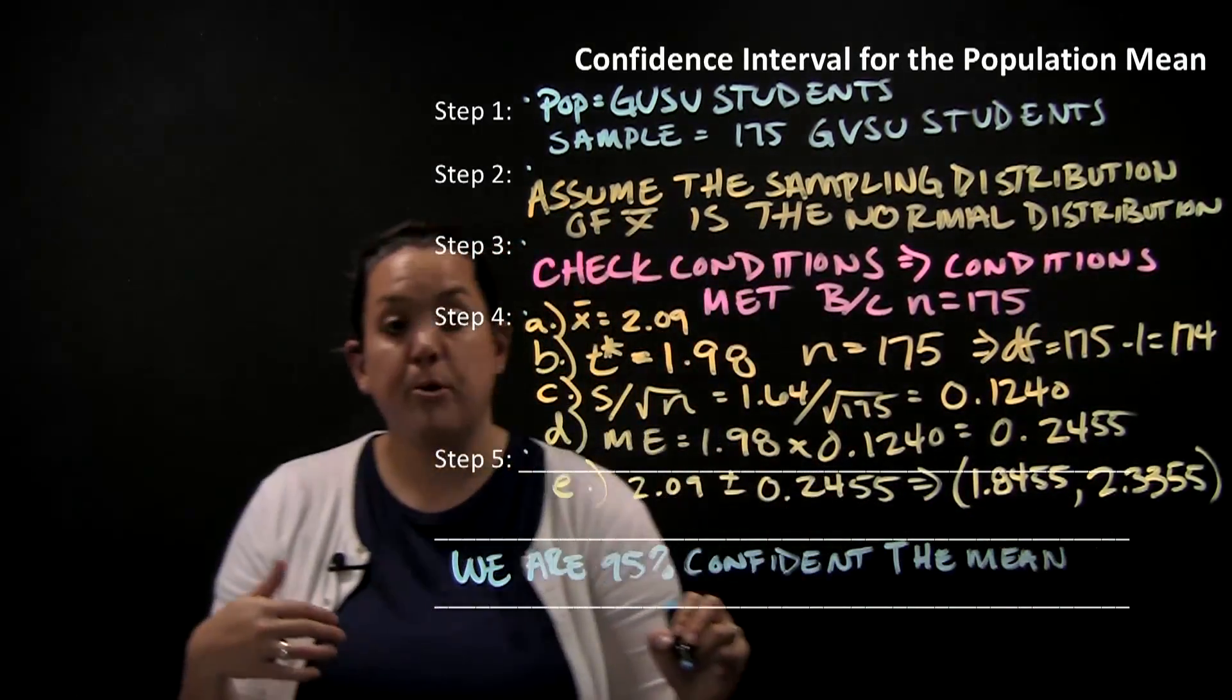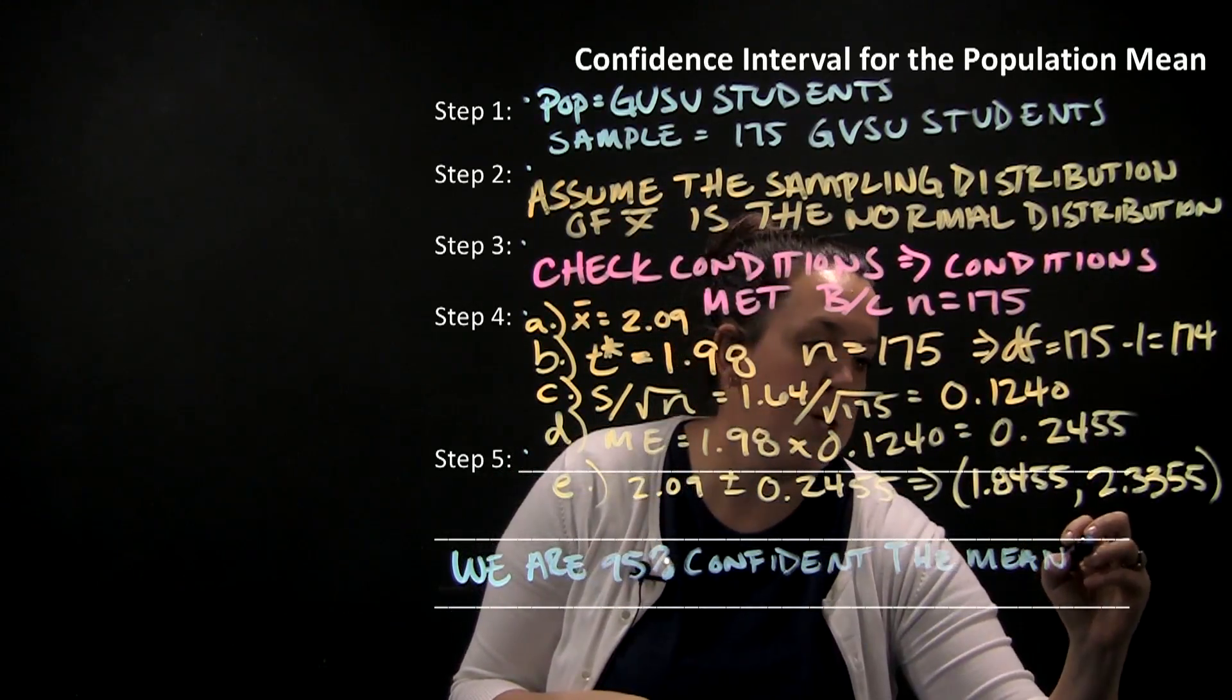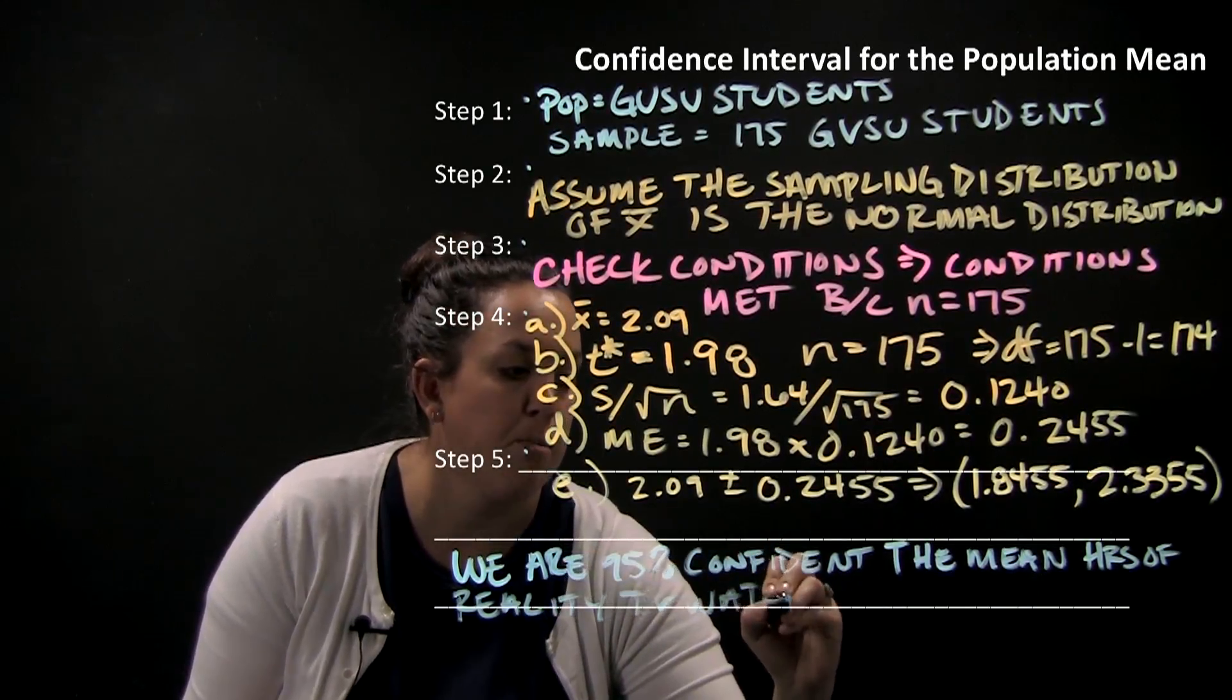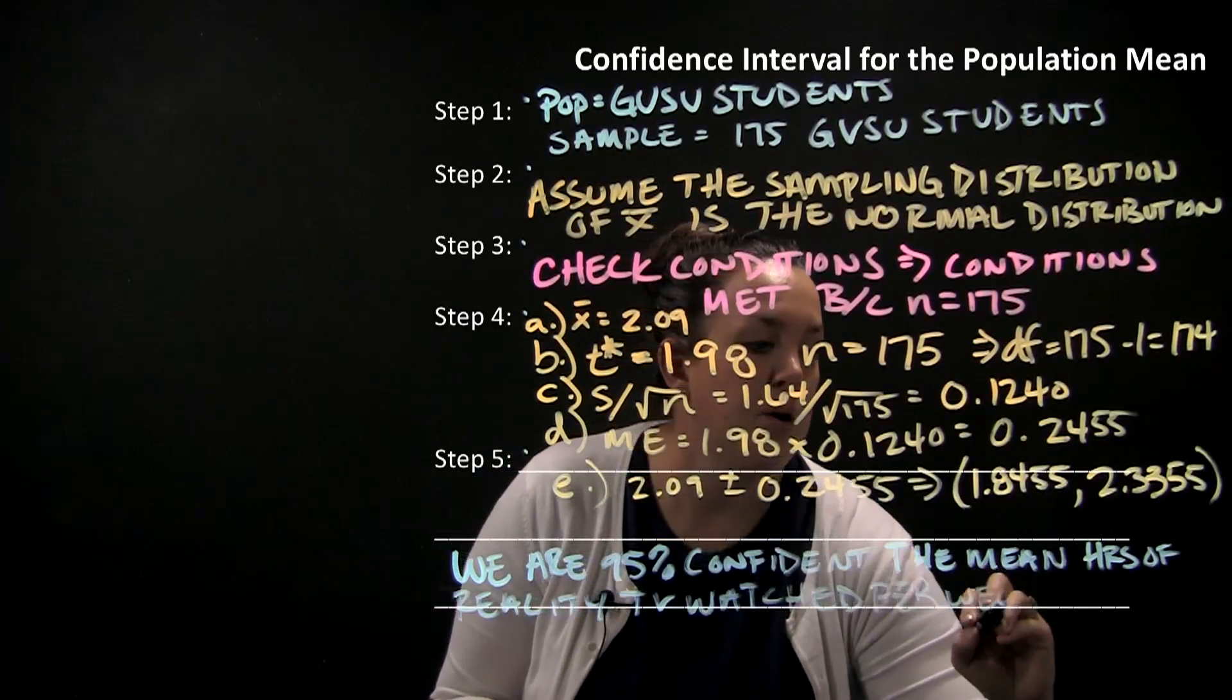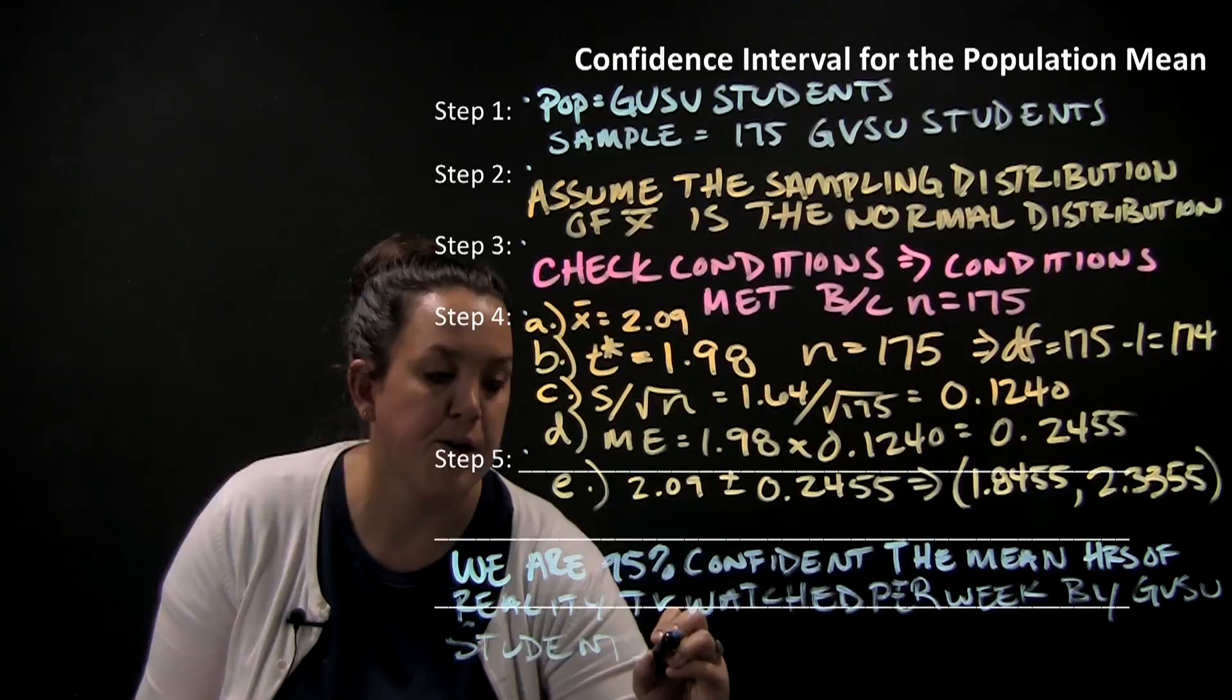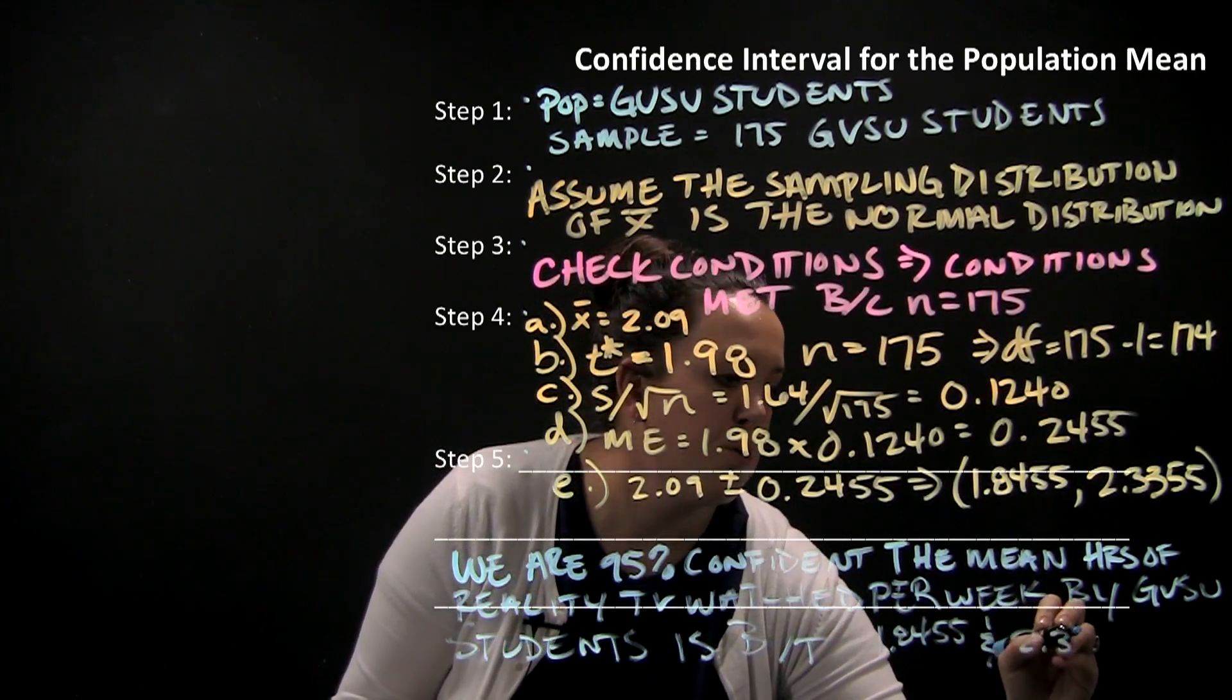Then we'll state the variable that we're measuring. Here we're measuring reality TV watched per week. So it's going to be we are 95% confident the mean hours of reality TV watched per week. Then we would state our population - that was GVSU students.